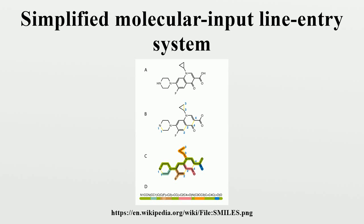The terms canonical and isomeric can lead to some confusion when applied to SMILES. They describe different attributes of SMILES strings and are not mutually exclusive. Typically, a number of equally valid SMILES strings can be written for a molecule. For example, CCO, OCC, and CC all specify the structure of ethanol. Algorithms have been developed to generate the same SMILES string for a given molecule; these algorithms choose only one of them.